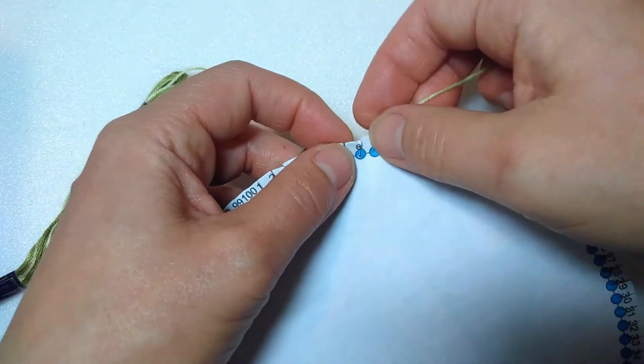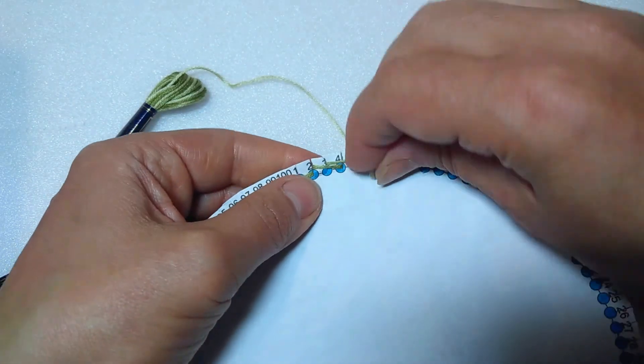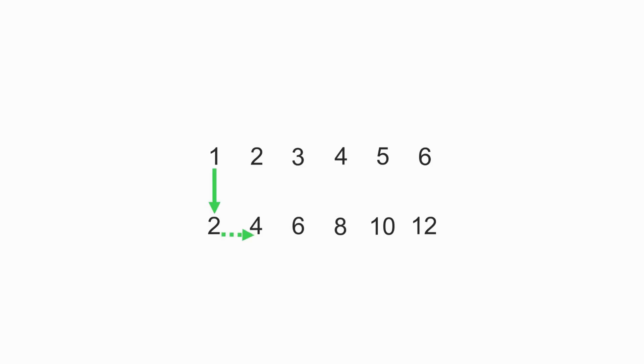Then, working the opposite way, bring the thread out at 8 and connect it to 4. Continue around the circle in this way, making every second connection in the opposite direction.